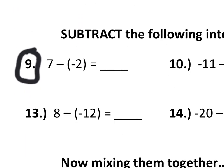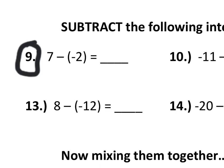Now, subtracting negative numbers. When we subtract a negative number, that can be the same thing as adding the positive version. So 7 minus negative 2 is the same thing as 7 plus 2. And we know that 7 plus 2 is 9.